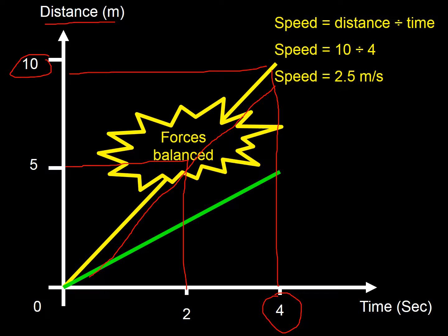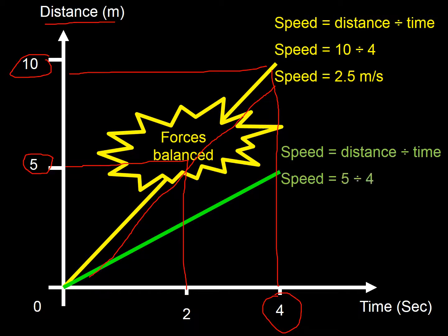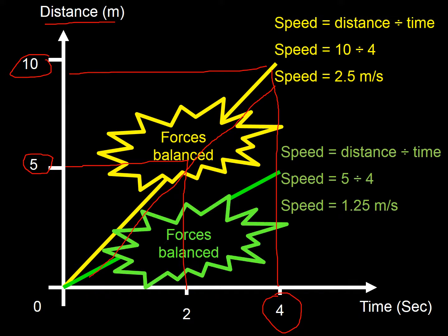Here's another one — same idea, speed equals distance divided by time. But now the distance is just 5 meters in 4 seconds, so speed equals 5 divided by 4, which is 1.25 meters per second. Forces are balanced, just like before.